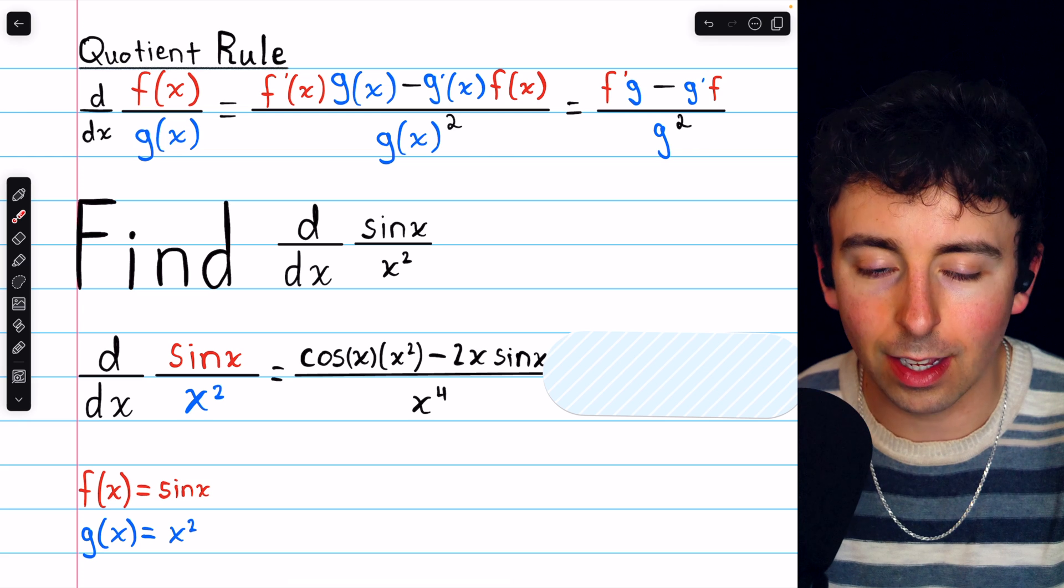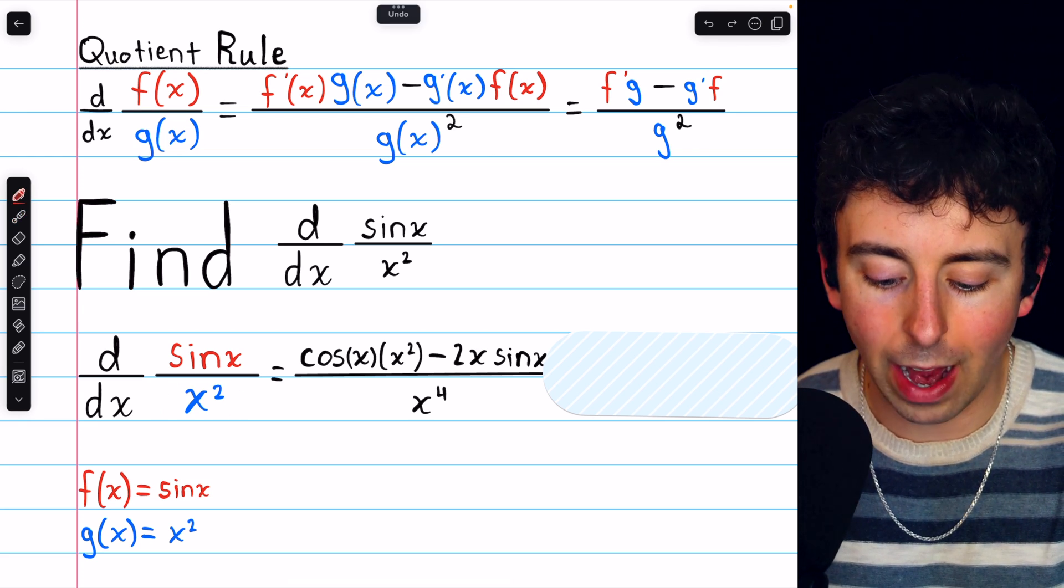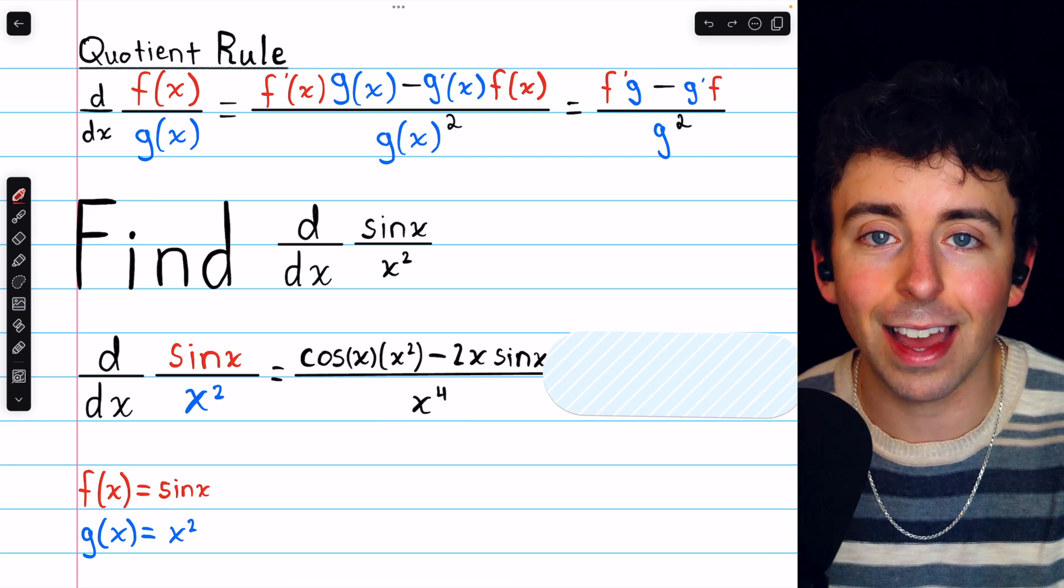We then divide by g squared, the denominator squared, and the square of x squared is just x to the fourth because we multiply the exponents.